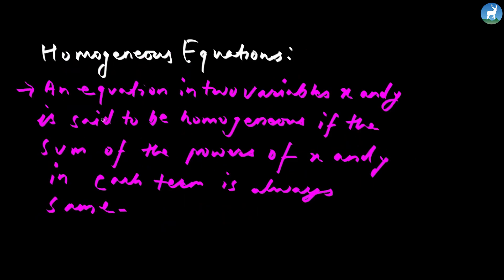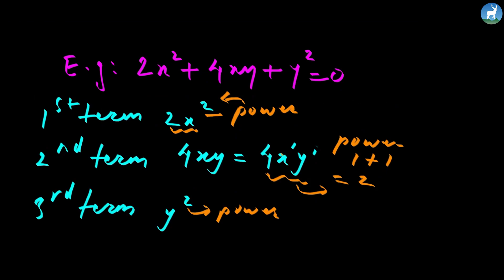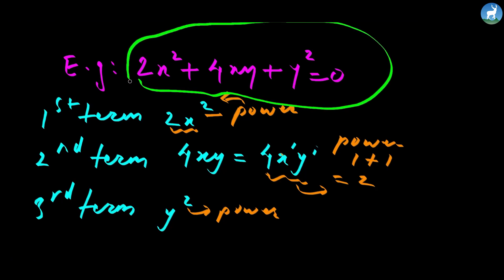By definition, a homogeneous equation is one in two variables where the sum of the powers of x and y in each term is always the same. For example: 2x squared plus 4xy plus y squared — the power in each term is 2, so the power is the same. This is a homogeneous equation in the second degree.